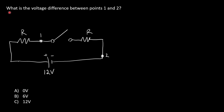Another video where we are going to start off with a question. What is the voltage difference between points one and two in this circuit? Is it zero volts, six volts, or 12 volts? If we look at the circuit, we see we have a 12-volt battery, a resistor R, there's point one. We then have an open switch, another resistor R, and we have point two. So what is the voltage difference between points one and two? Zero, six, or 12 volts?